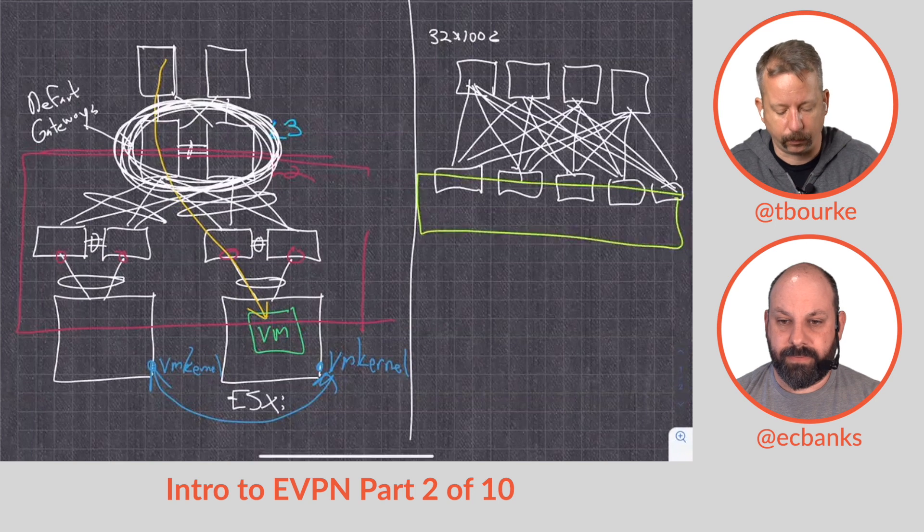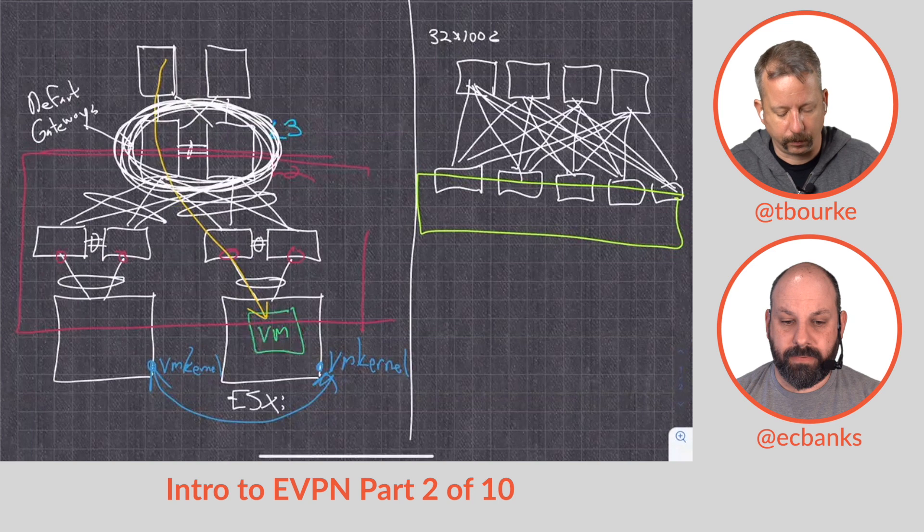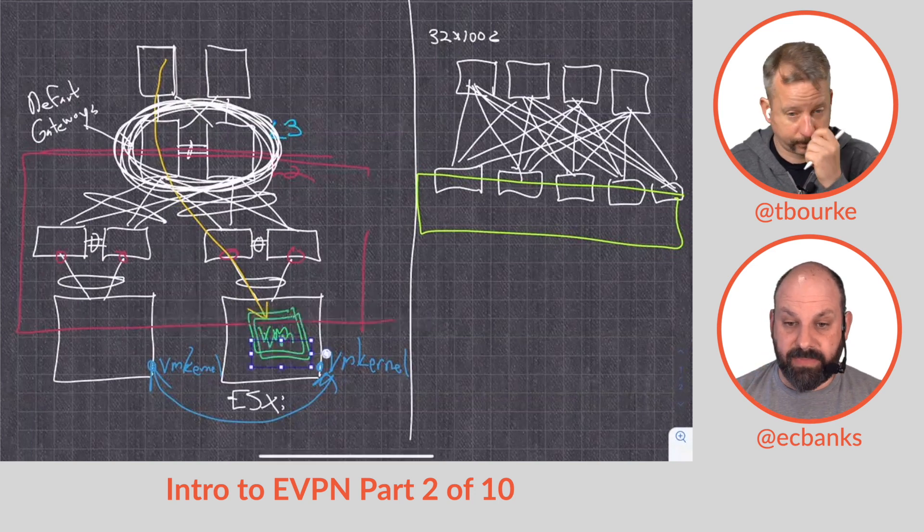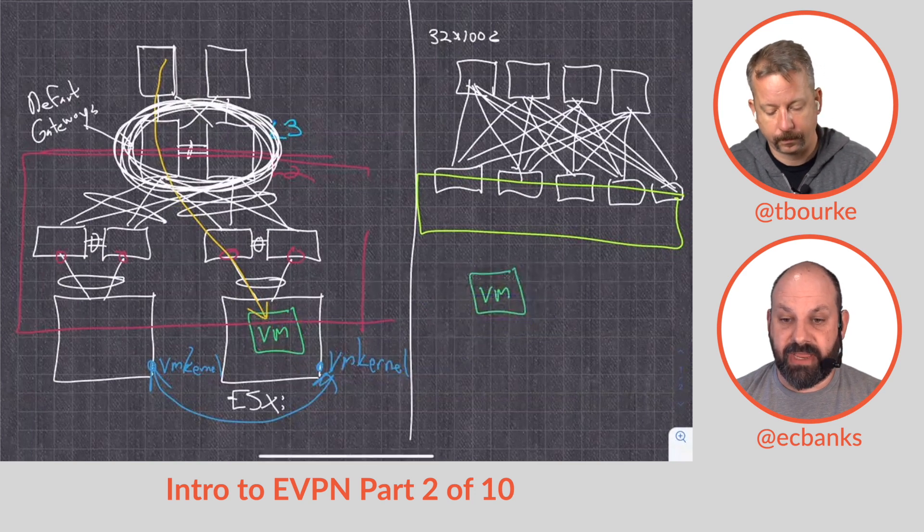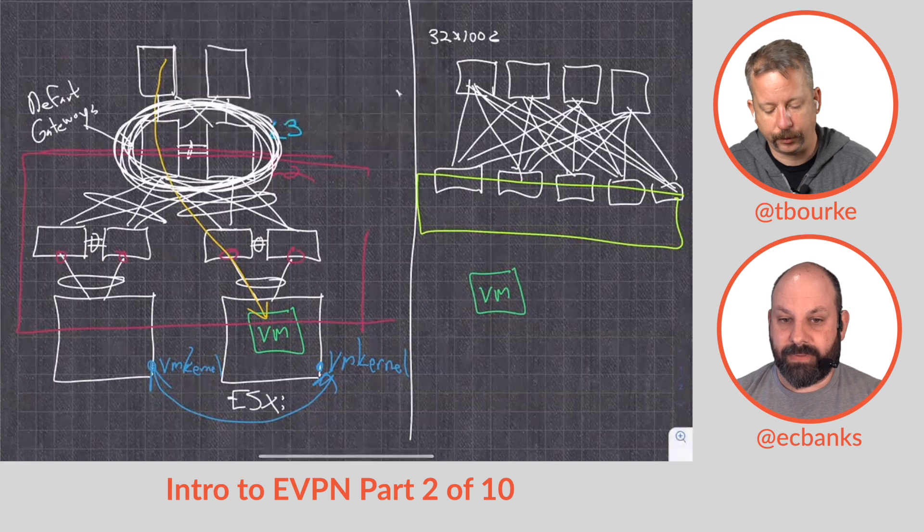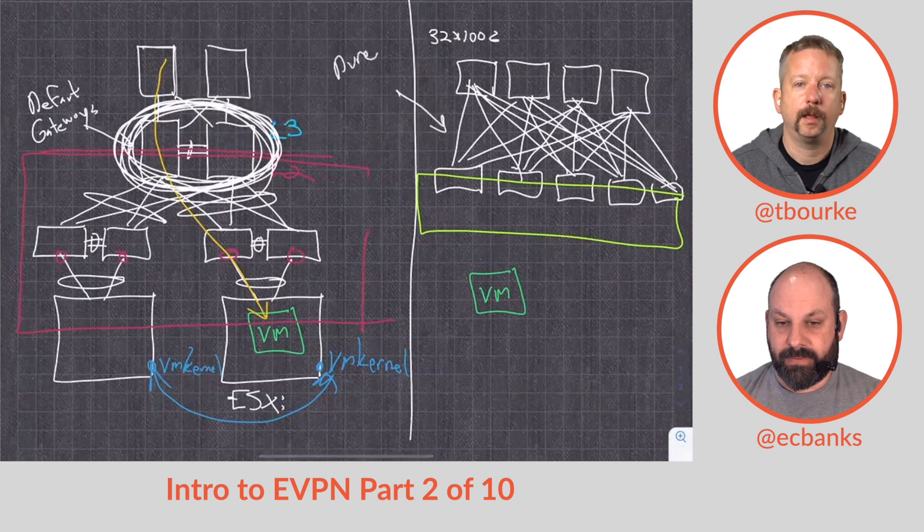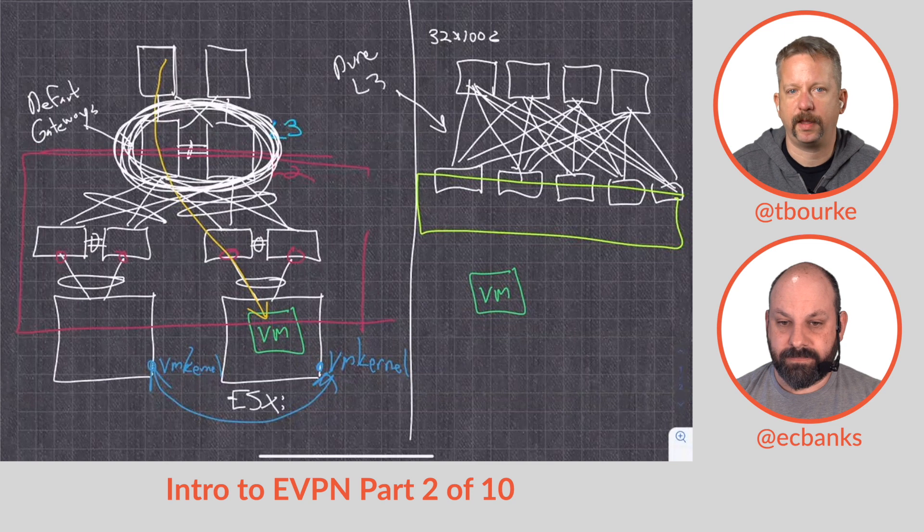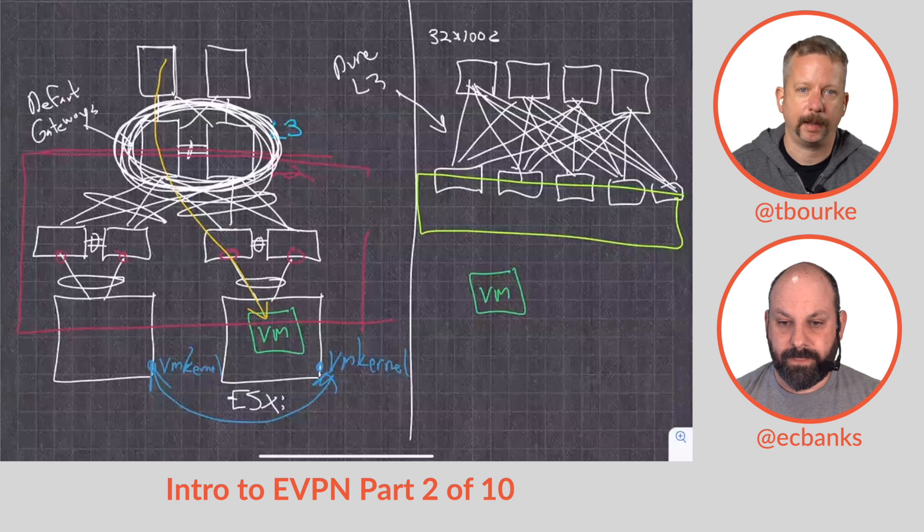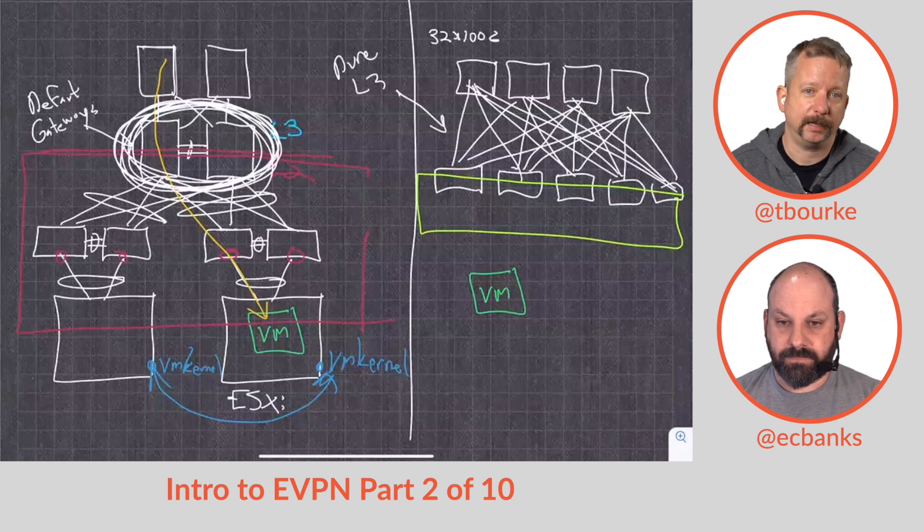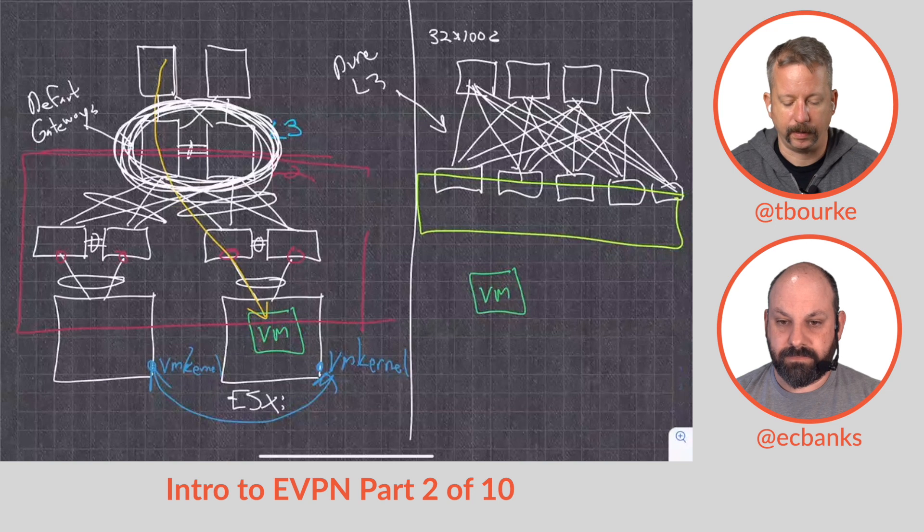EVPN allows us to stretch a layer 2 segment across all of our leaves so that we can support the ever important VMotion. Even though all those connections between the leaf layer and the spine layer is layer 3, it's pure layer 3 leaf to spine. Nothing's blocking. There's a routing protocol handling link failures and availability and calculating ECMP and route paths, and all that stuff is handled. But we can have our cake and eat it too, and we can VMotion anywhere around on any leaf.